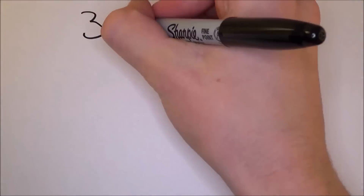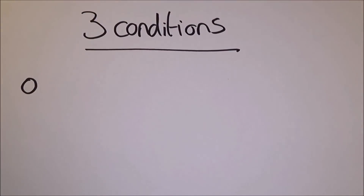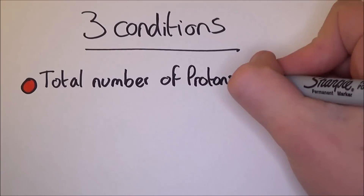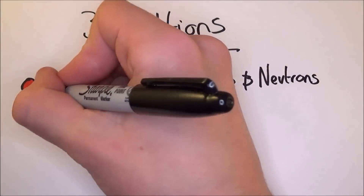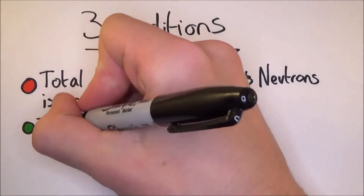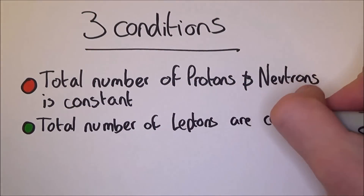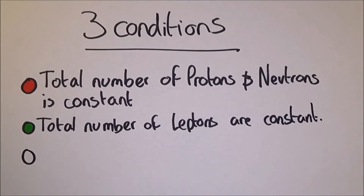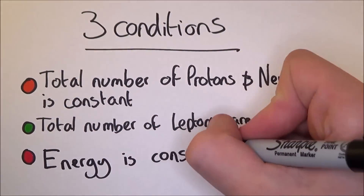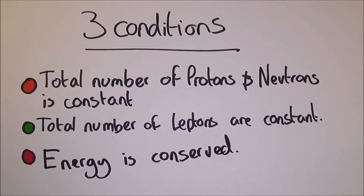What this means is that anything that can happen will happen if three conditions are met. The total number of protons and neutrons is conserved — so if we lose a proton, we gain a neutron. The total number of leptons is conserved — so if we lose an electron, we gain a neutrino. And the total charge is conserved.